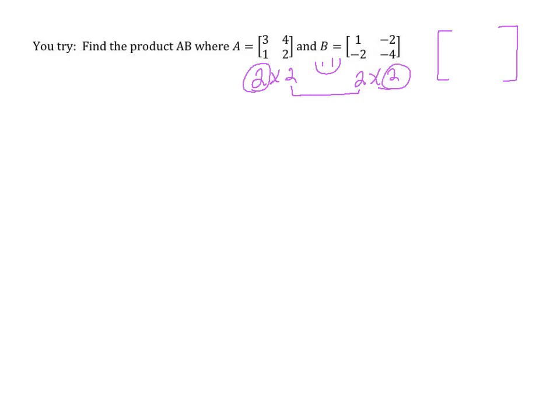So let's start with the top, the top left. So we'll have 3 times 1, plus 4 times negative 2. So 3 plus a negative 8, giving us negative 5.